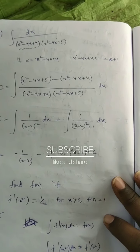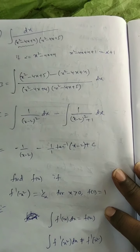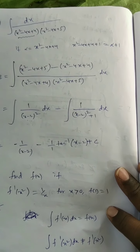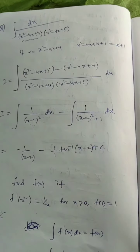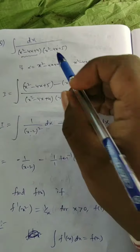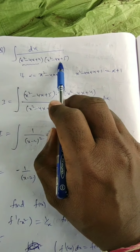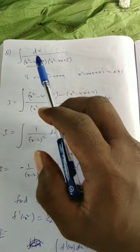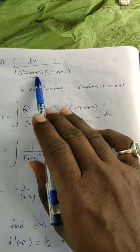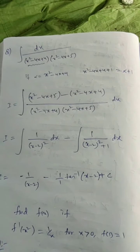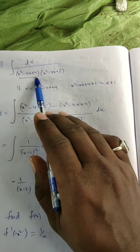Let's discuss some more basic problems of integration, then we'll go to standard substitution. Yesterday I discussed standard substitution; we are going to start that one, but before that I'm recalling some basic questions. Here: find the integration of dx upon (x² - 4x + 4)(x² - 4x + 5).